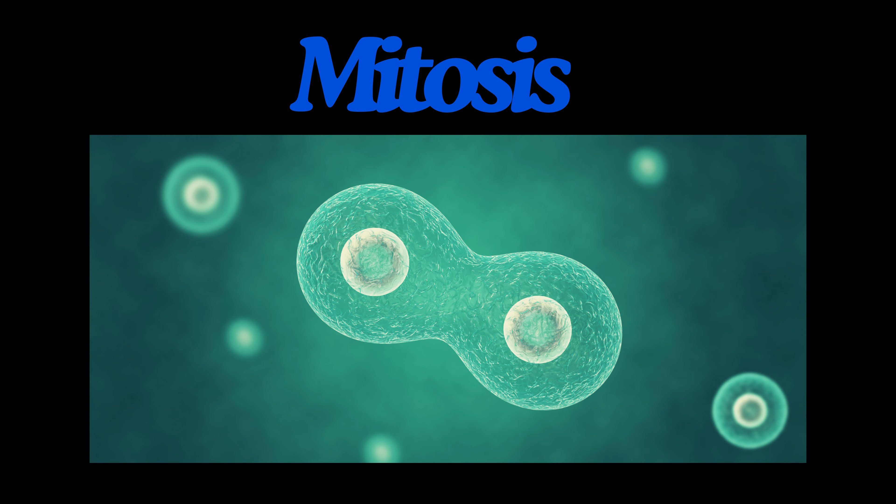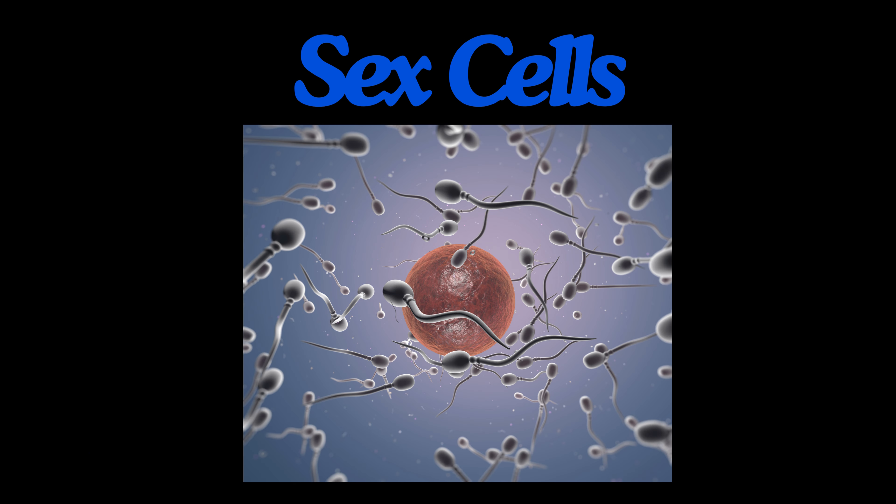Mitosis produces new identical cells for growth and repair. Meiosis produces sex cells with half the usual DNA. Gametes — sperm and egg cells — join in fertilization to produce a new organism. Asexual reproduction involves one parent and produces identical offspring. Sexual reproduction involves two parents and produces genetically diverse offspring.